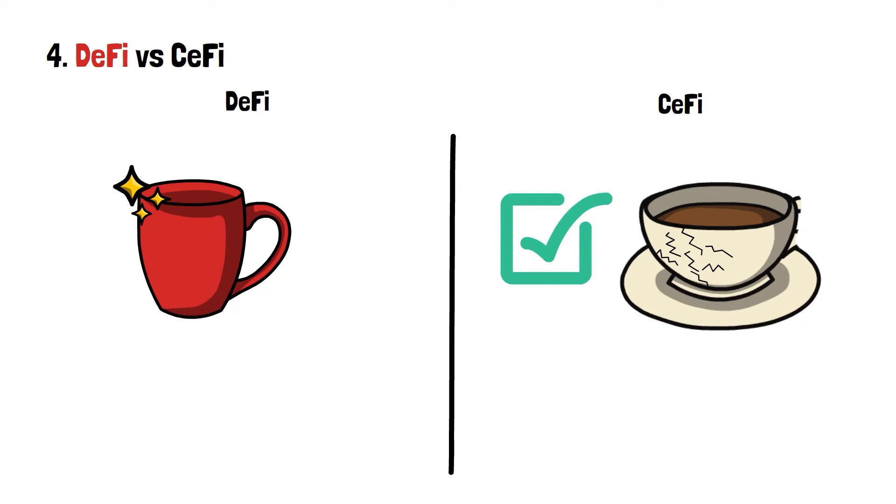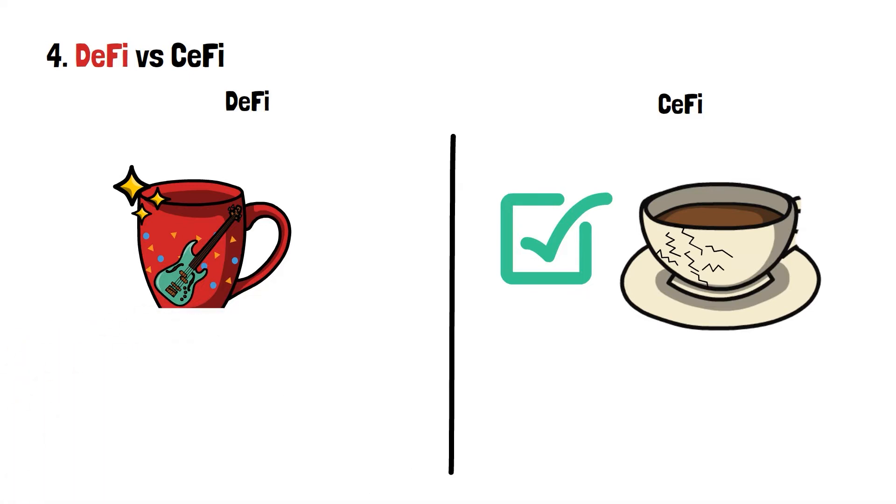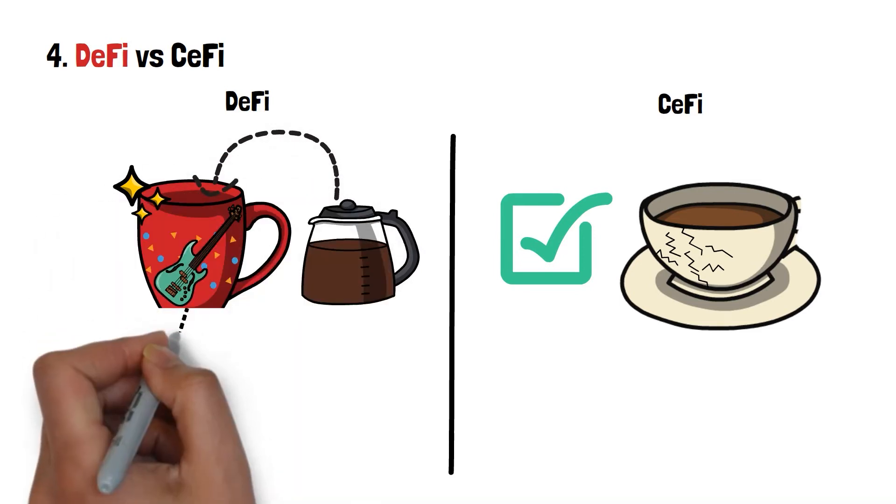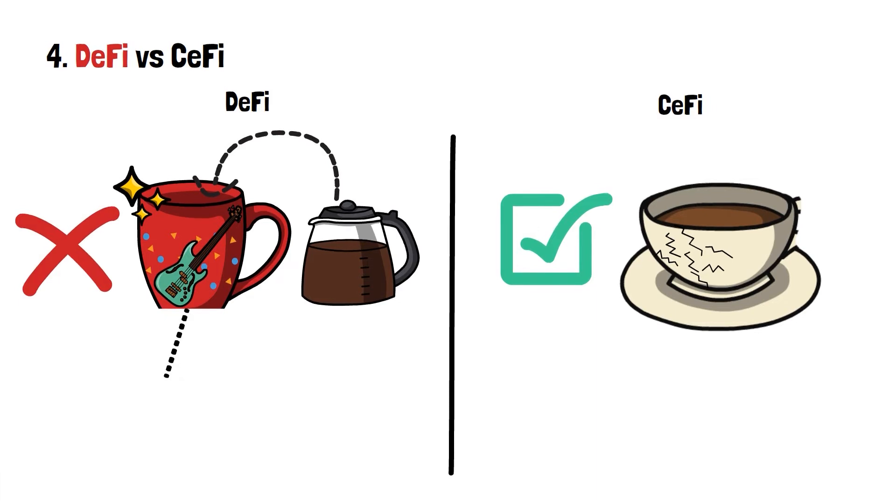It might even have your favorite rock band's logo engraved into it. There's just one catch, though. It doesn't have a bottom. So, any drink you pour into it will simply spill right through. No matter how cool the new cup might be, it does not serve its essential, primary purpose, and thus can be rendered useless.